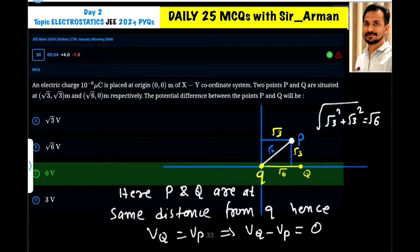An electric charge of 10^(-6) microcoulomb is placed at the origin (0,0) of an x-y coordinate system. Two points P and Q are situated at (√3, √3) meters and (√3, 0) meters respectively. The potential difference between points P and Q is to be determined.